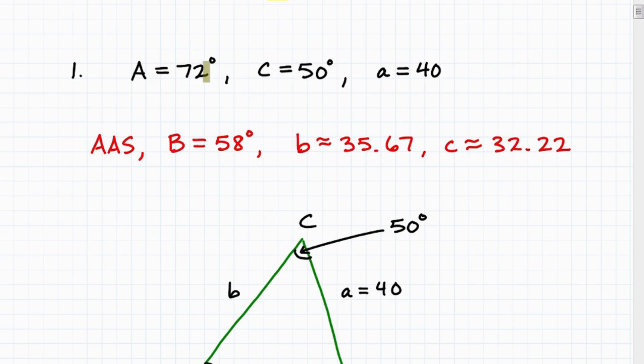We're given an angle 72, we're given another angle 50 degrees. So 72 degrees, 50 degrees. And here we have a length of 40 for A. Now, here are the answers if you want to go ahead and check your solution here on this particular problem. But this is an angle angle side scenario.